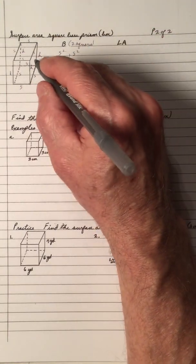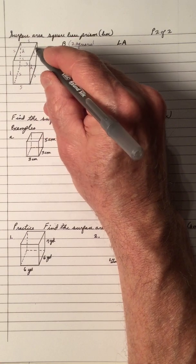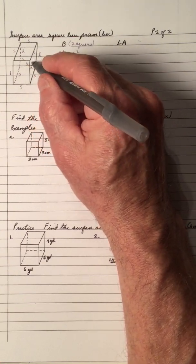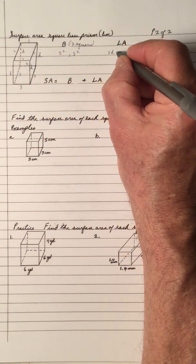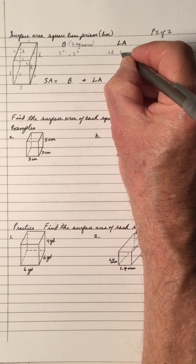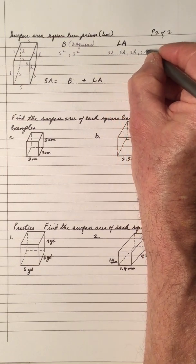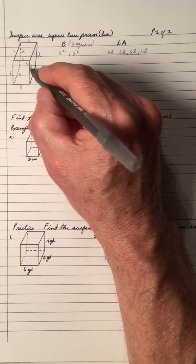And the lateral area is that this side has a length times the width, this side has a length times the width. So the sides are S times H, but there's four of them, because all the heights are the same and all the sides are the same.